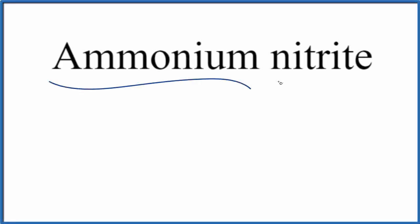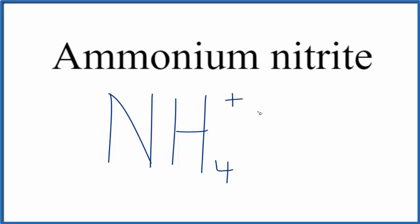To write the formula for ammonium nitrite, the first thing we need to recognize is that ammonium is the ammonium ion, which you have to memorize or look up on a table of polyatomic ions. The ammonium ion is NH4 with an ionic charge of 1+. This is a good one to remember; it comes up a lot in chemistry.